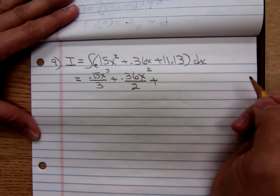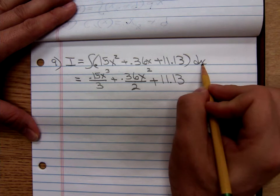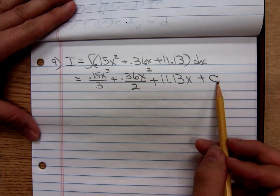Then our anti-derivative of a number is just that number with that letter x stuck on it, plus my constant C. That's what I'm talking about. We're going to have to find that constant of integration.